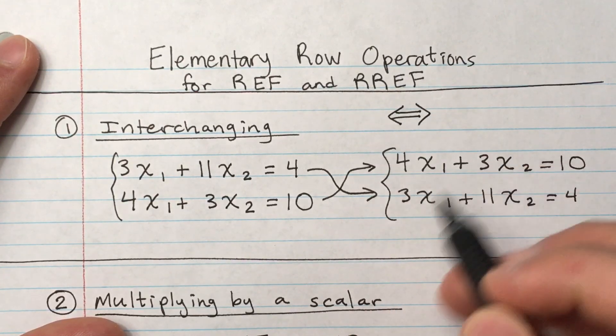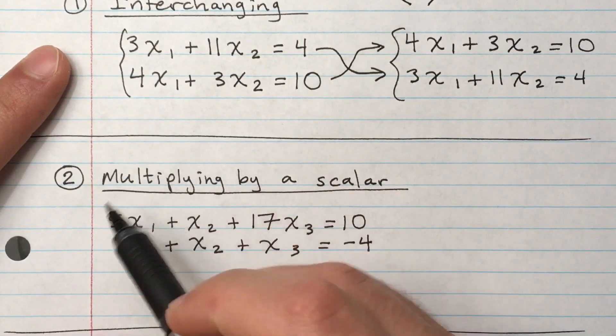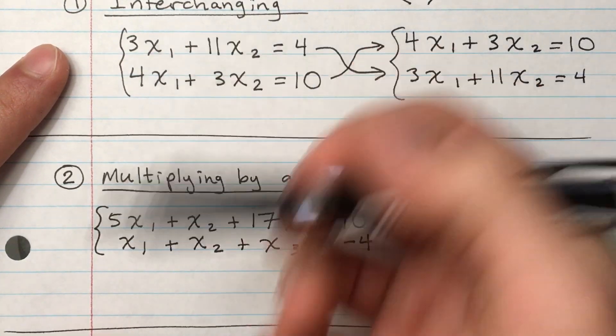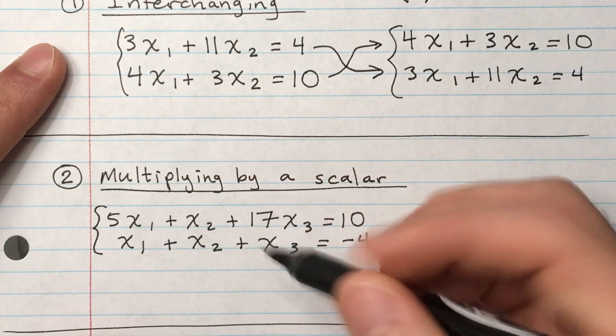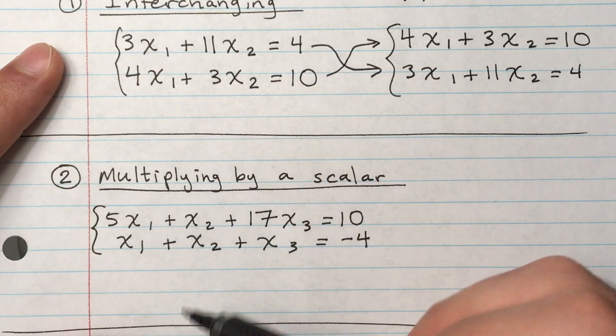Okay, so that's the first one, interchanging. And then the second one is multiplying by a scalar. So if you have a system of two equations, or you can have as much as you want, you could single out any row and multiply by a scalar and that would still be equivalent.